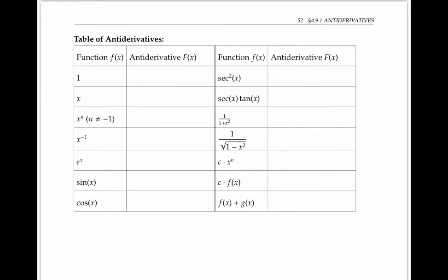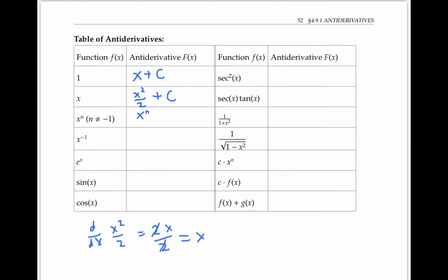If you know the derivatives for some standard functions, then it's pretty easy to guess some antiderivatives. For example, the antiderivative of 1 is x, since the derivative of x is 1 — and we can add a constant C for the general antiderivative. The antiderivative of x is x squared over 2, because when I take the derivative of x squared over 2, the 2 that I pull down cancels with the 2 in the denominator, leaving x. More generally, the antiderivative of x to the n for any n not equal to negative 1 is x to the n plus 1 divided by n plus 1, plus a constant C.